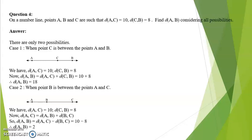Next, question number 4. On the number line, points A, B and C are such that distance AC equal to 10, distance CB equal to 8. Find distance AB considering all possibilities. With the given information, only two possibilities are possible.